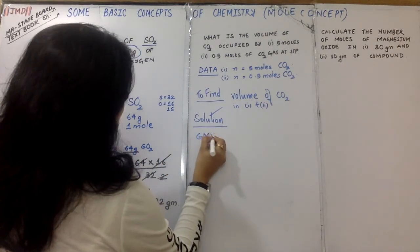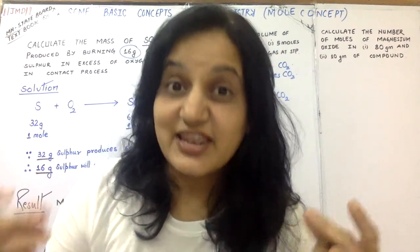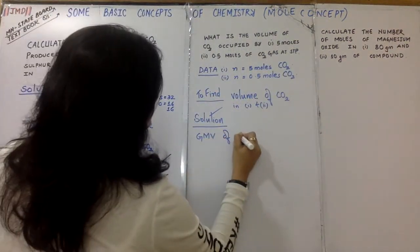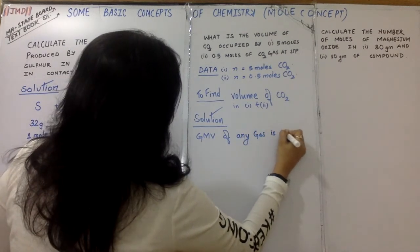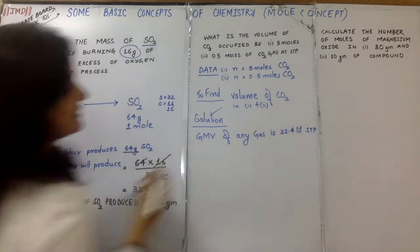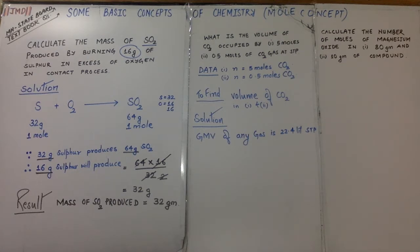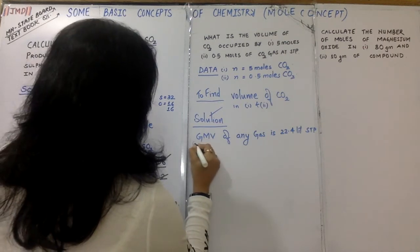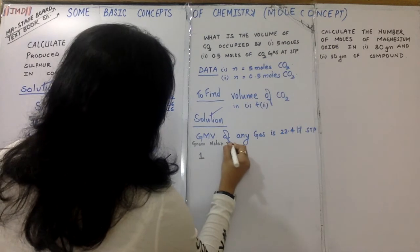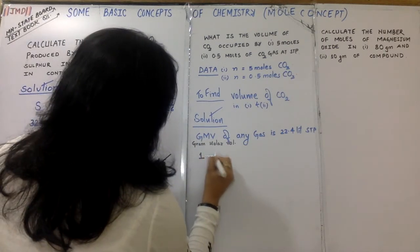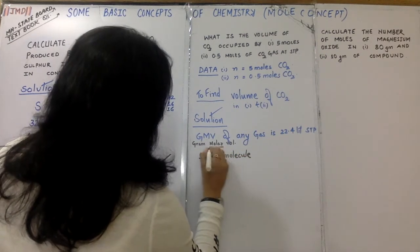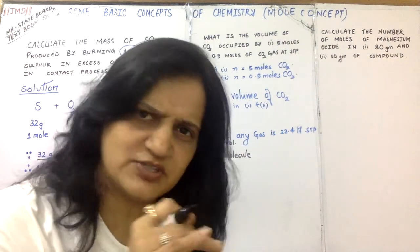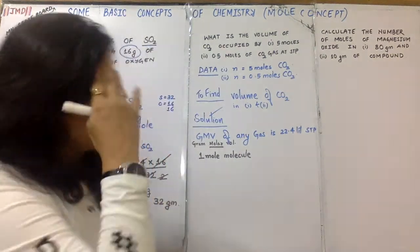Next comes the solution. GMV, gram molar volume - I hope you all remember, gram molar volume of any gas is 22.4 liters at STP. GMV means gram molar volume. That means one mole of the molar mass - one mole molecule - the volume of the molar mass of any gas occupies how much volume? Volume is fixed at 22.4 liters, but the molar mass can differ depending upon which gas it is.